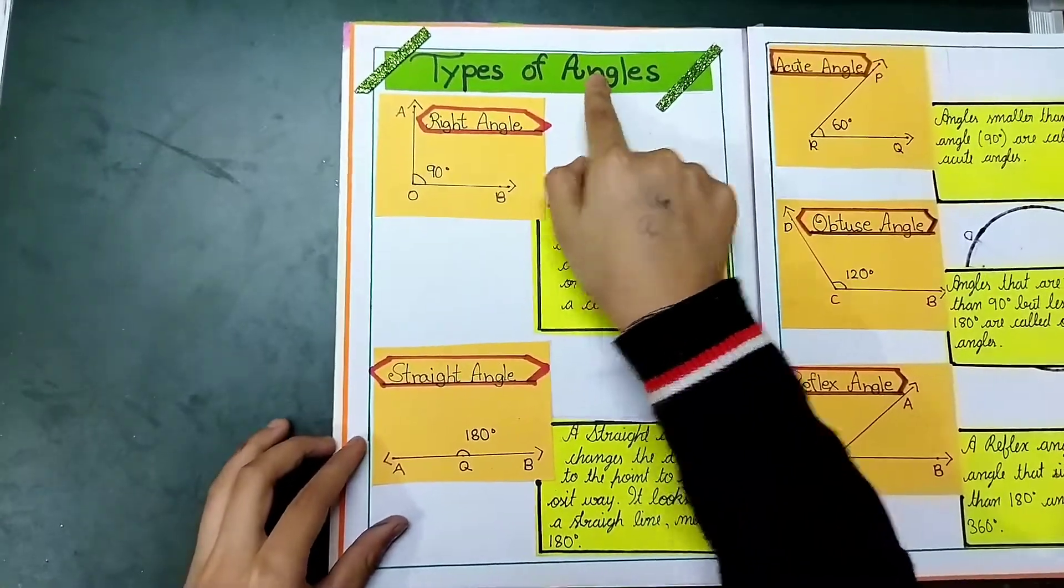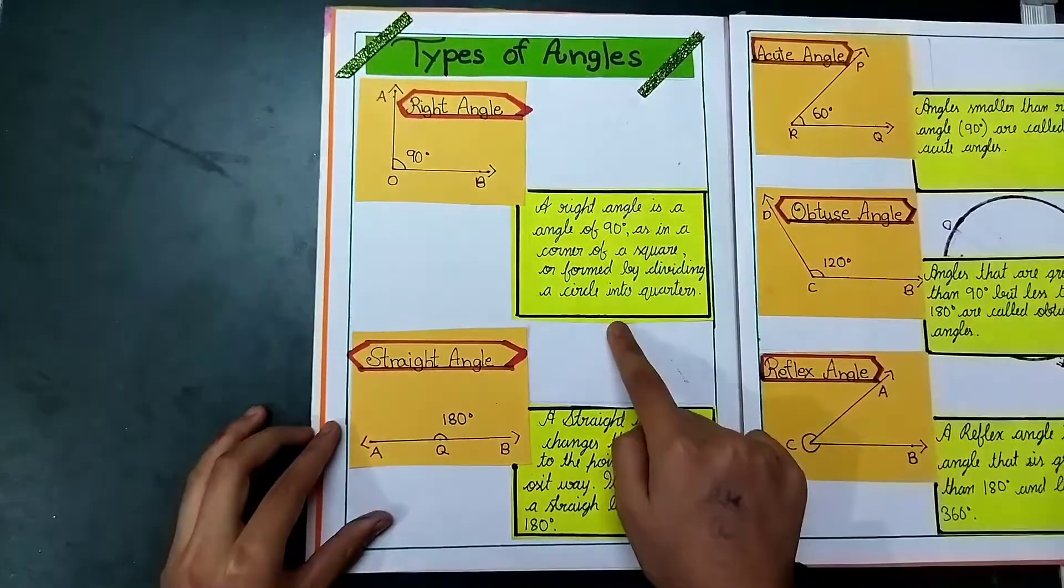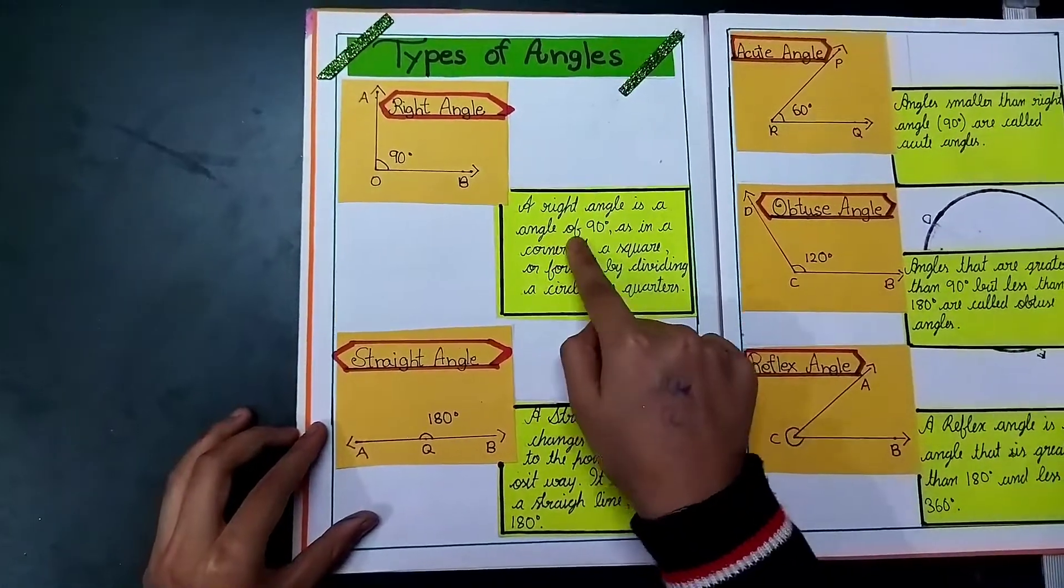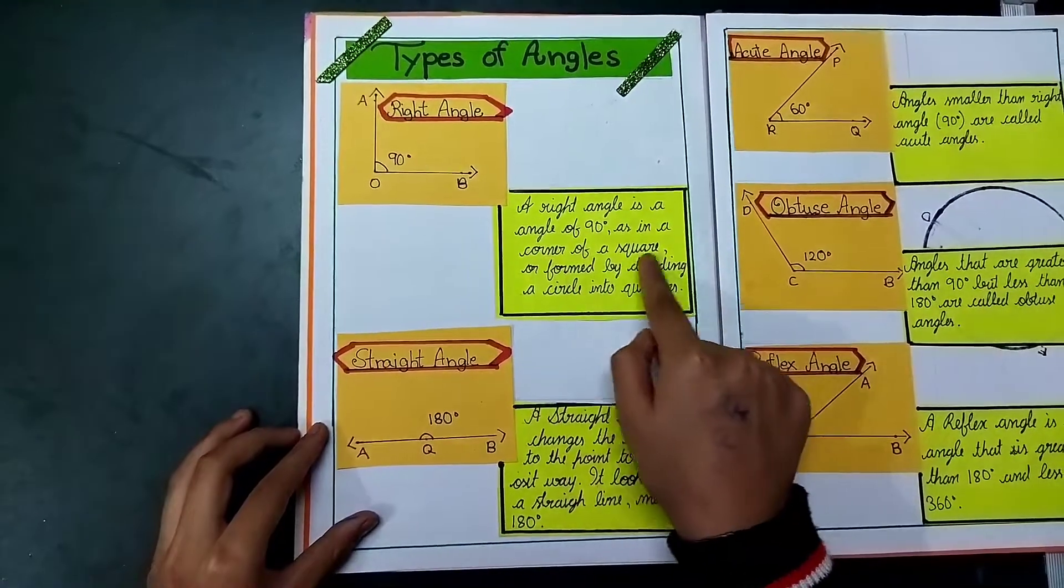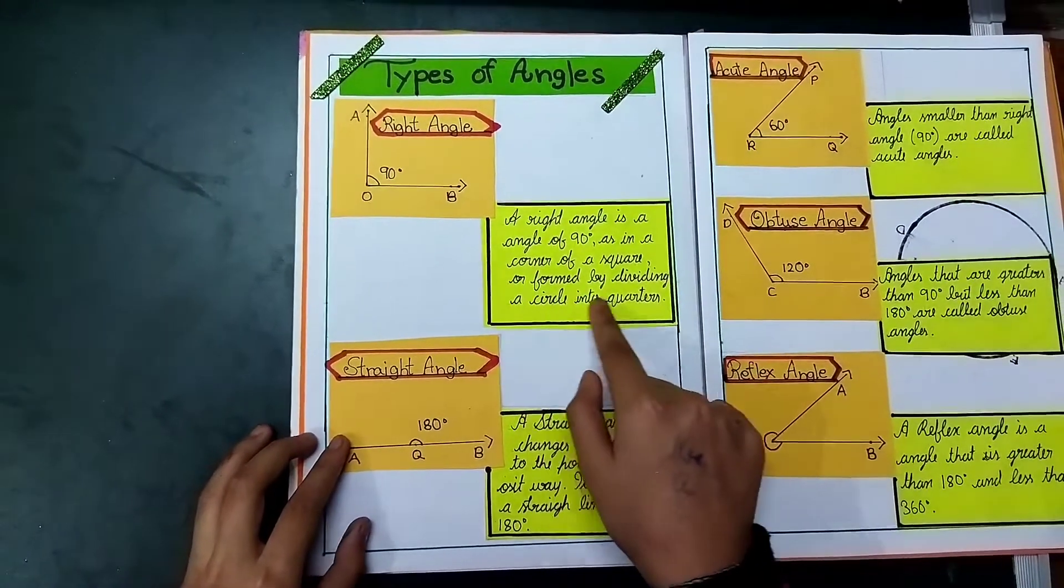Here is the types of angles. Right angle. Here is the definition: A right angle is an angle of 90 degree as in a corner of a square or formed by dividing a circle into quarters.